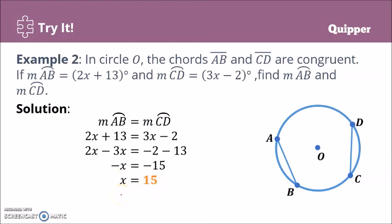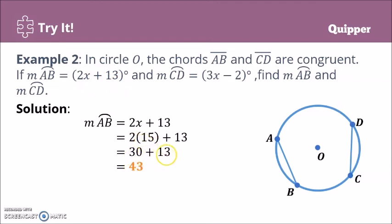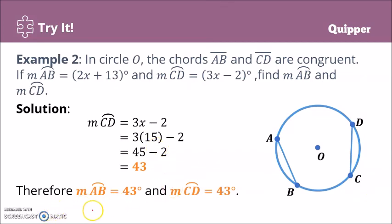Substituting x equals 15 into the measure of arc AB: 2 times 15 plus 13 equals 30 plus 13, which is 43 degrees. Since the arcs are congruent, arc CD is also 43 degrees. Therefore, the measure of arc AB equals 43 degrees and the measure of arc CD also equals 43 degrees.